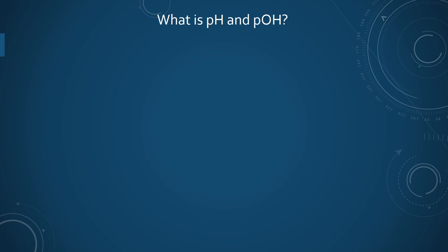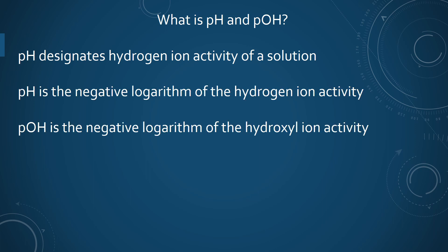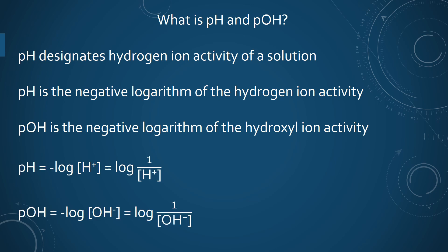Welcome friends. Today in this video we are discussing what is pH and pOH. pH designates hydrogen ion activity of a solution, and pH is the negative logarithm of the hydrogen ion activity. Similarly, pOH is the negative logarithm of the hydroxyl ion activity. These can also be represented as log inverse of the concentration of hydrogen ions or hydroxyl ions.